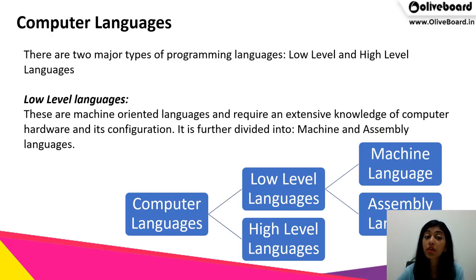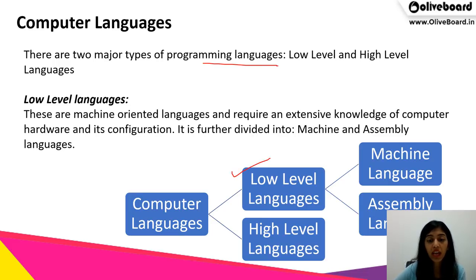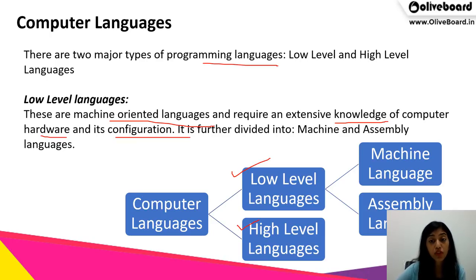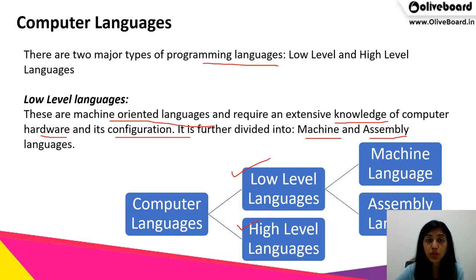Now we will talk about computer languages. There are two major types of programming languages: low level languages and high level languages. Low level languages are machine-oriented languages that require extensive knowledge of computer hardware and its configuration. They are further divided into machine language and assembly language.